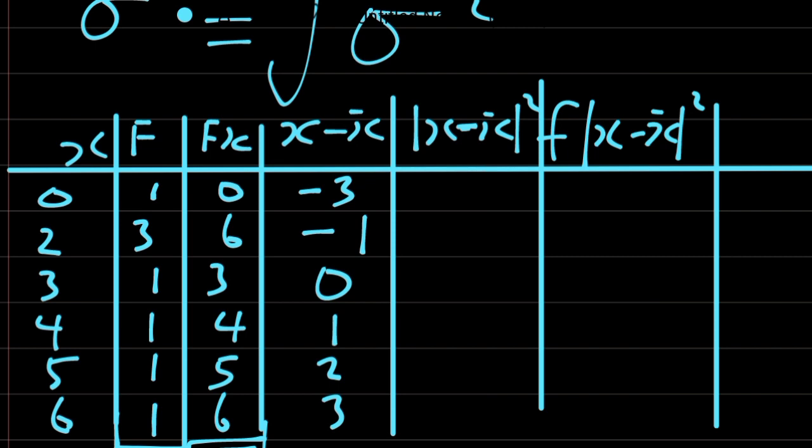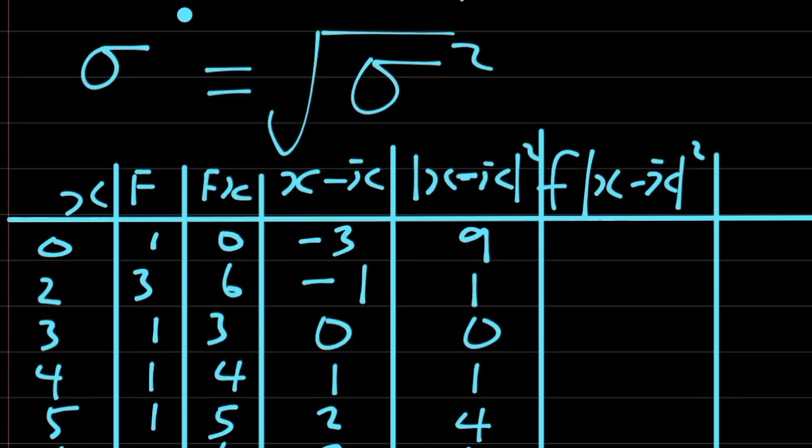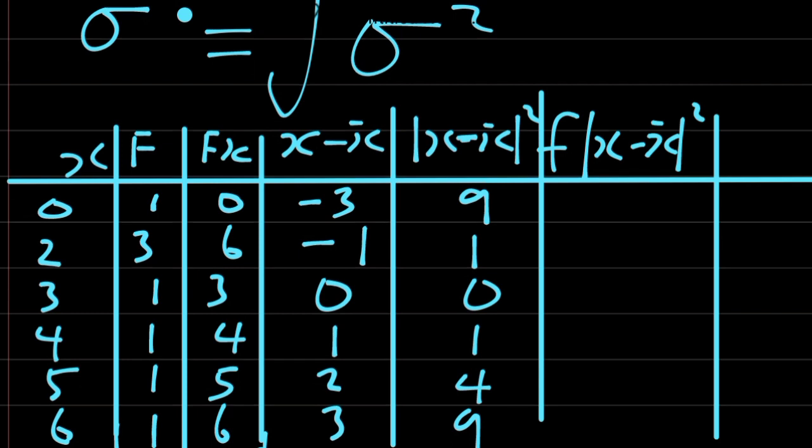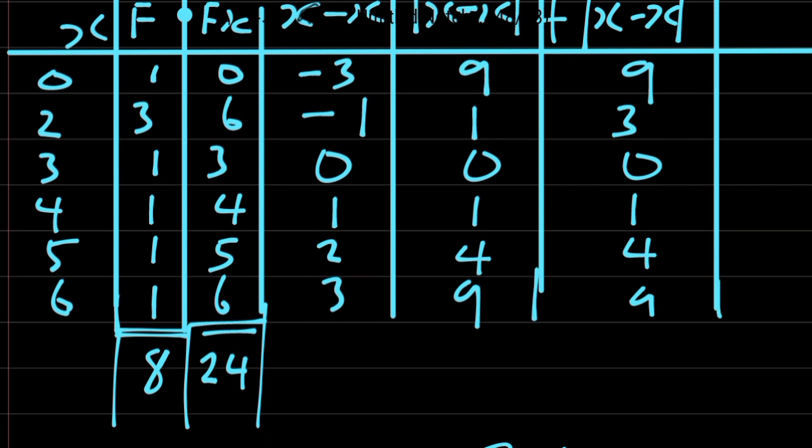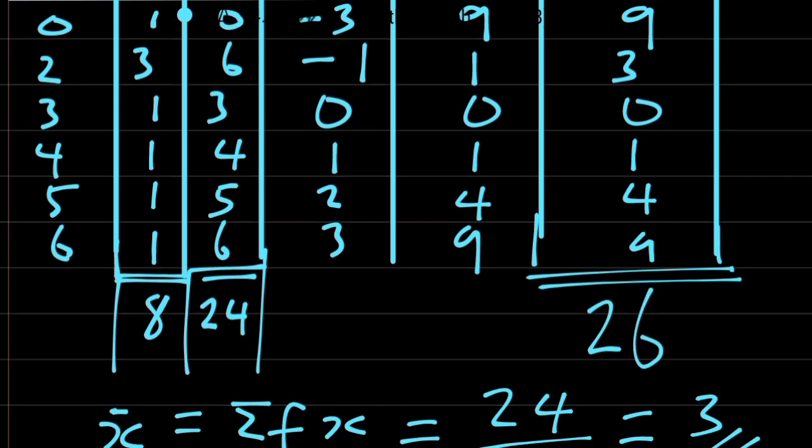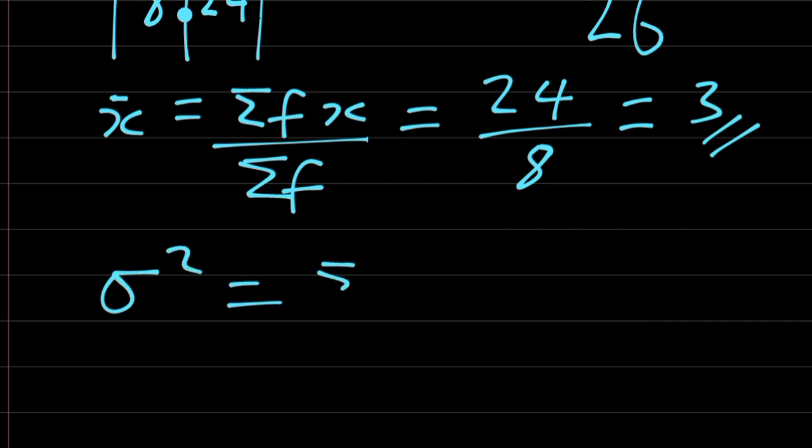So the absolute value of minus 3 is 3, and 3 squared is 9. Then we have 1, 0, 1, 4, and 9. Multiplying by frequency: 1 times 9 is 9, 3 times 1 is 3, 1 times 0 is 0, 1 times 1 is 1, 1 times 4 is 4, 1 times 9 is 9. Adding these: 9 plus 3 is 12, plus 0 is 12, plus 1 is 13, plus 4 is 17, plus 9 is 26.